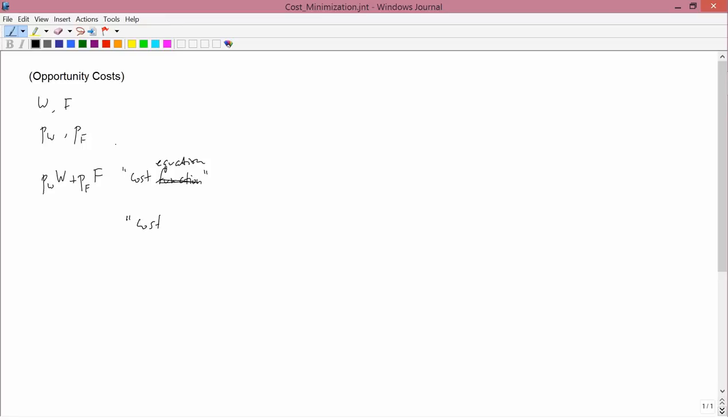The cost function is the standard term. That's why I actually just made that mistake. Because the cost function is written this way. It's cost of inputs as a function of Q, which is quantity of output.